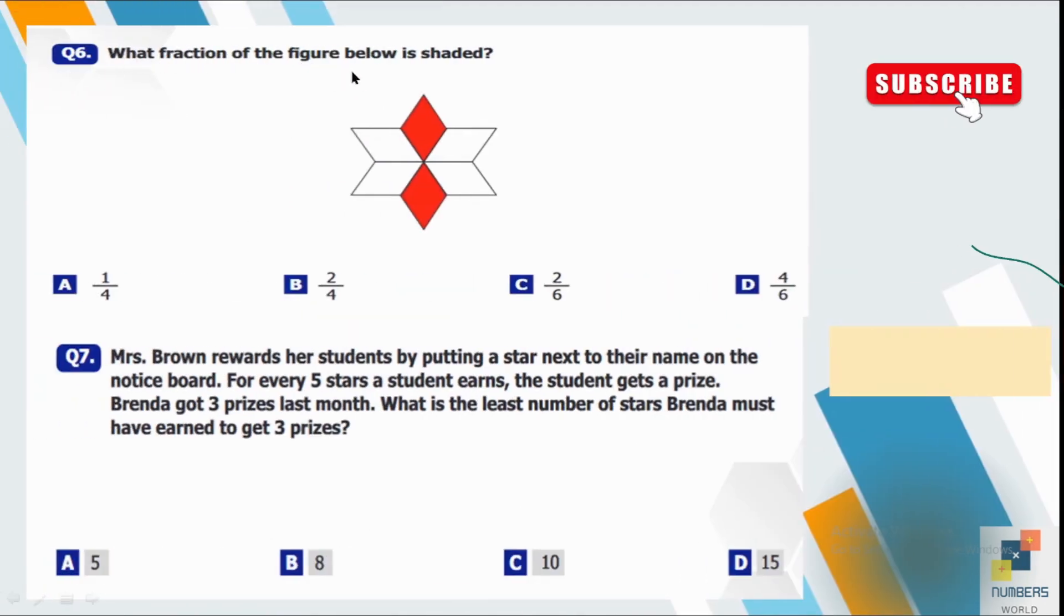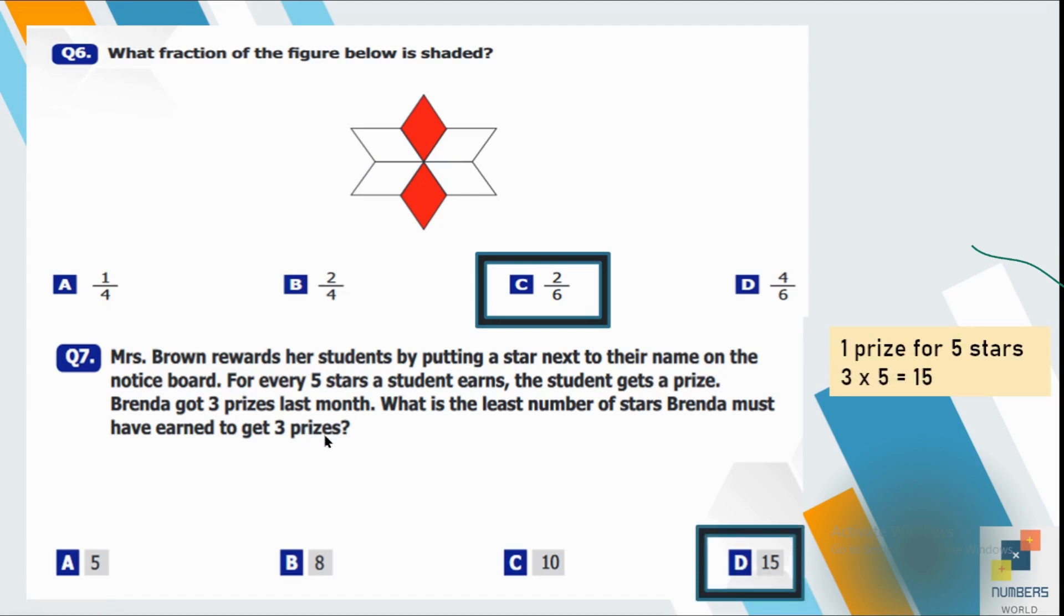Question number six. What fraction of the figure below is shaded? So you may clearly see two parts are colored out of six. So C is our correct option here. Question number seven. Mrs. Brown rewards her student by putting a star next to their name on the notice board. For every five stars a student earns, a student gets a prize. Brenda got three prizes last month. What is the least number of stars Brenda must have earned to get the three prizes? So here you know that the information is given that one prize is for five stars and Brenda got three prizes. So three fives are 15. So she must have earned 15 stars at least.